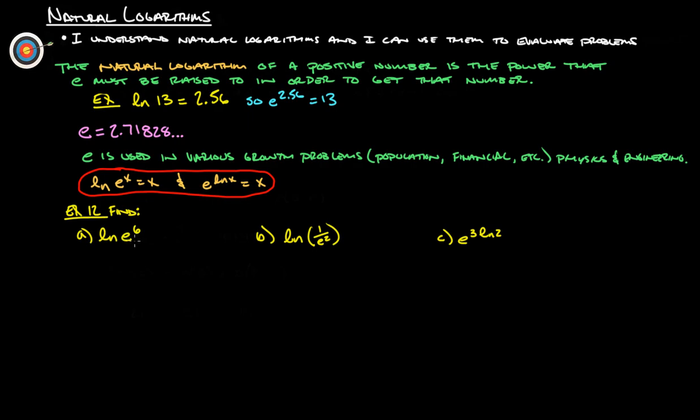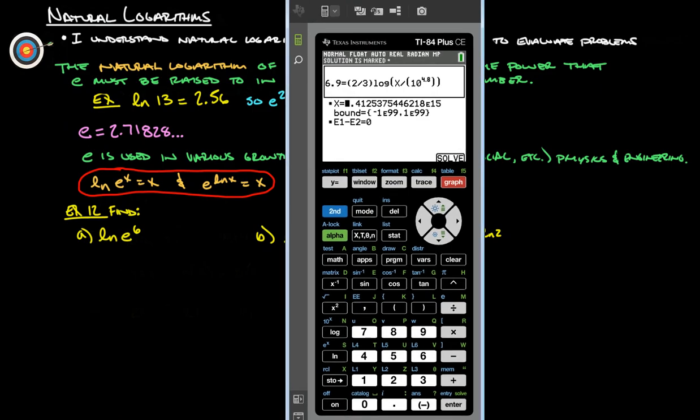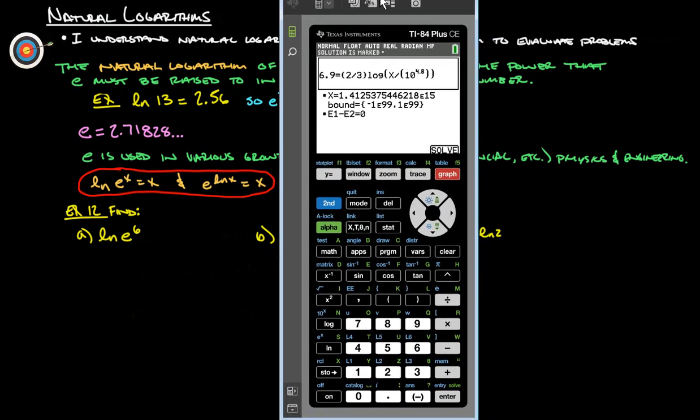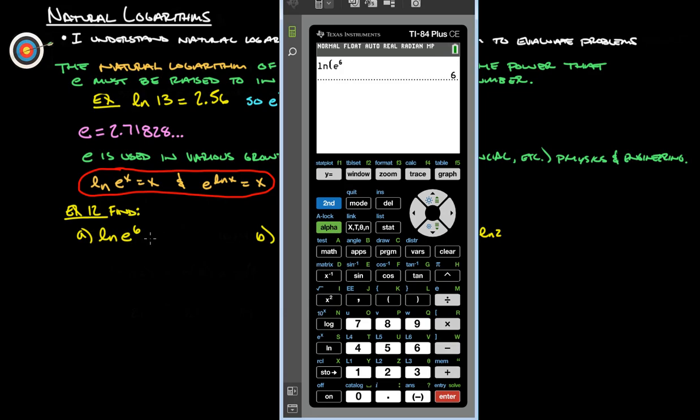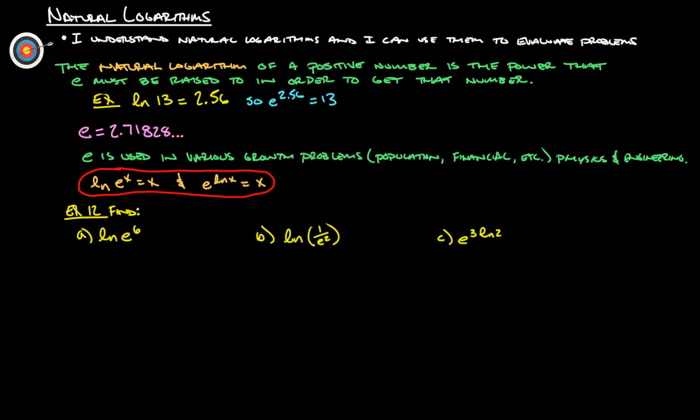So find natural log of E to the 6. This will probably be easiest just covered on our calculator here. So natural log is this one right here. It looks like N, but that's LN. So we're going to do 2nd E to the, and then 6th power, and then we simply hit enter and we get 6.